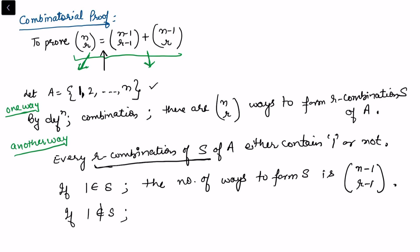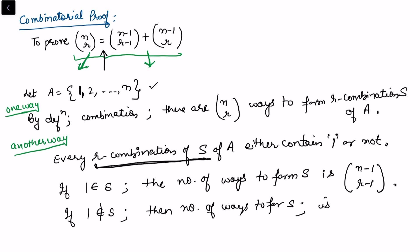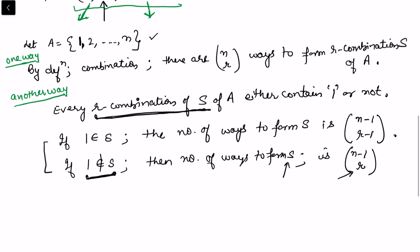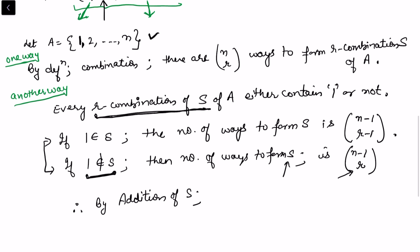If 1 does not belong to the set S, then I still have to select r elements to form the r-combination. Since the object 1 is excluded, I choose all r elements from the remaining n minus one objects. So the number of ways to form such S is n minus one choose r. These two cases are disjoint, so by the addition principle, the total number of r-combinations is n minus one choose r minus one plus n minus one choose r.